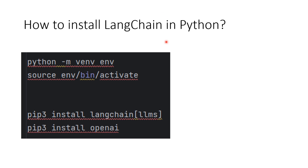Now let's see how we can install Langchain in Python and use it. The first step is to create a virtual environment using the command python -m venv and the name of your virtual environment. Here we assume the name is env. Then you need to activate that virtual environment using the command source env/bin/activate. This way you can activate your virtual environment and install the required packages within it.